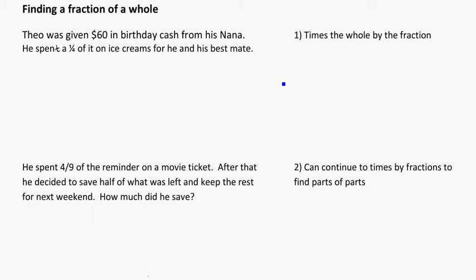Looking at this problem, Theo was given $60 in birthday cash from his Nana, so 60 here is the whole amount. This is what we're trying to split up. He spent a quarter of it on ice creams for he and his best mate. So the question would be, how much were the ice creams?